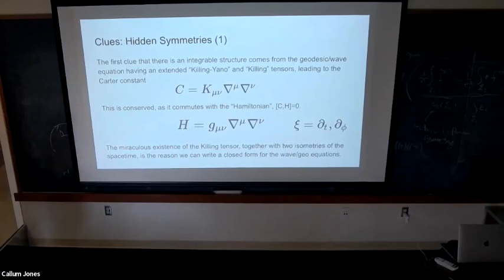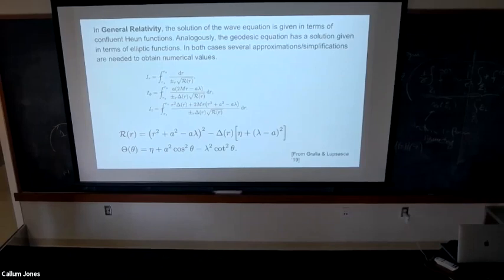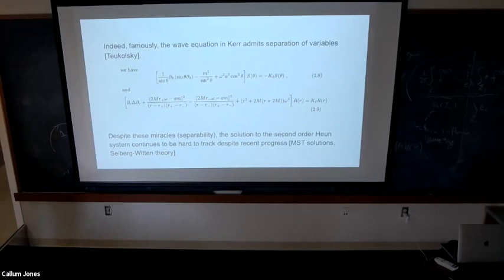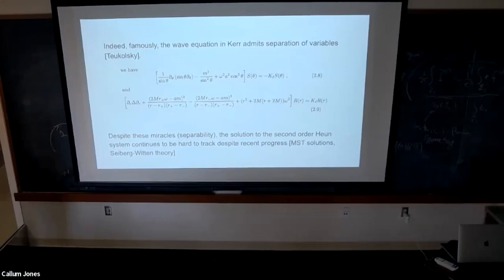The miraculous existence of the Killing tensor together with the two isometries — time translation and rotational symmetry — is the reason we can find a closed-form solution of both the wave and geodesic equations. Without that, we don't even have a formula. For the wave equation, we have a second-order differential equation that, thanks to the Killing tensor, separates into an angular component and a radial component. This was famously pointed out by Teukolsky. Even so, you still have a second-order confluent equation and need better ideas.